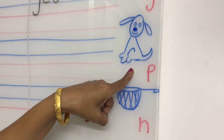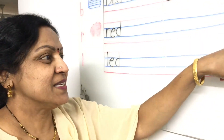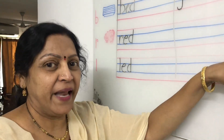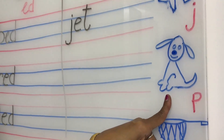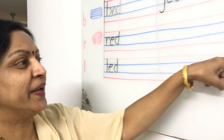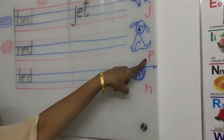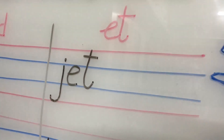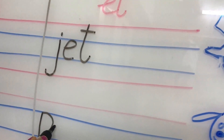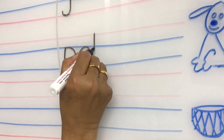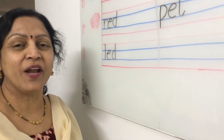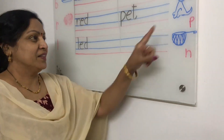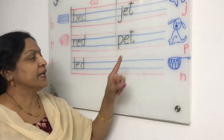This is a puppy, children — PET. What is this? This is PET — a pet animal. What is a pet animal, children? Doggy! Puppy, doggy. So this is the P letter. When you join this P letter to ET it will become PET. P... E... T... PET.